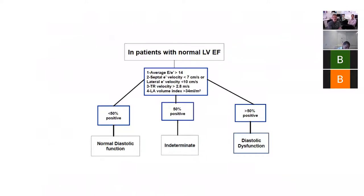If you have a patient with normal left ventricular ejection, you can basically divide between normal and the definite presence of diastolic dysfunction, with a number in between being indeterminate. I won't go through those parameters, which I'm certain that you know rather well.